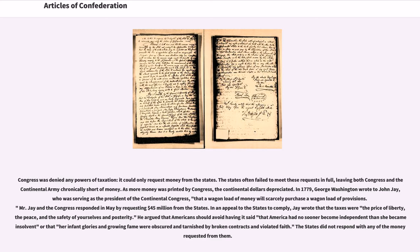Jay and the Congress responded in May by requesting $45 million from the states. In an appeal to the states to comply, Jay wrote that the taxes were the price of liberty, the peace, and the safety of yourselves and posterity. He argued that Americans should avoid having it said that America had no sooner become independent than she became insolvent, or that her infant glories and growing fame were obscured and tarnished by broken contracts and violated faith. The states did not respond with any of the money requested.